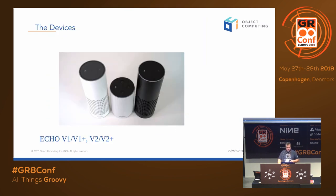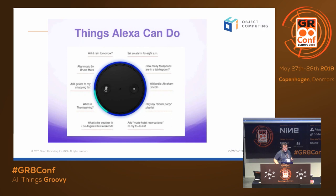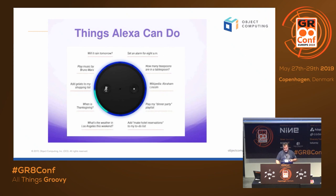Here are some of the devices. There have been three generations of Echoes now. The newest one and the older ones — these are version three and that's two. Basic things Alexa can do: you can ask if it'll rain tomorrow if it knows your location, it'll give you the weather, Wikipedia, things like that.